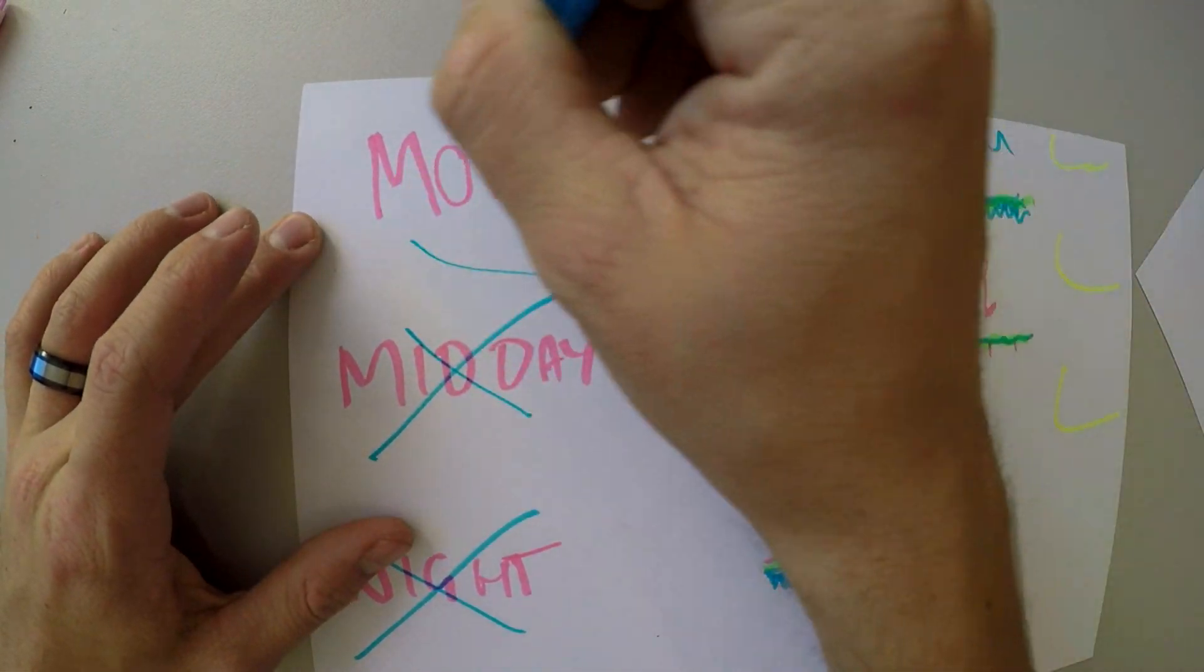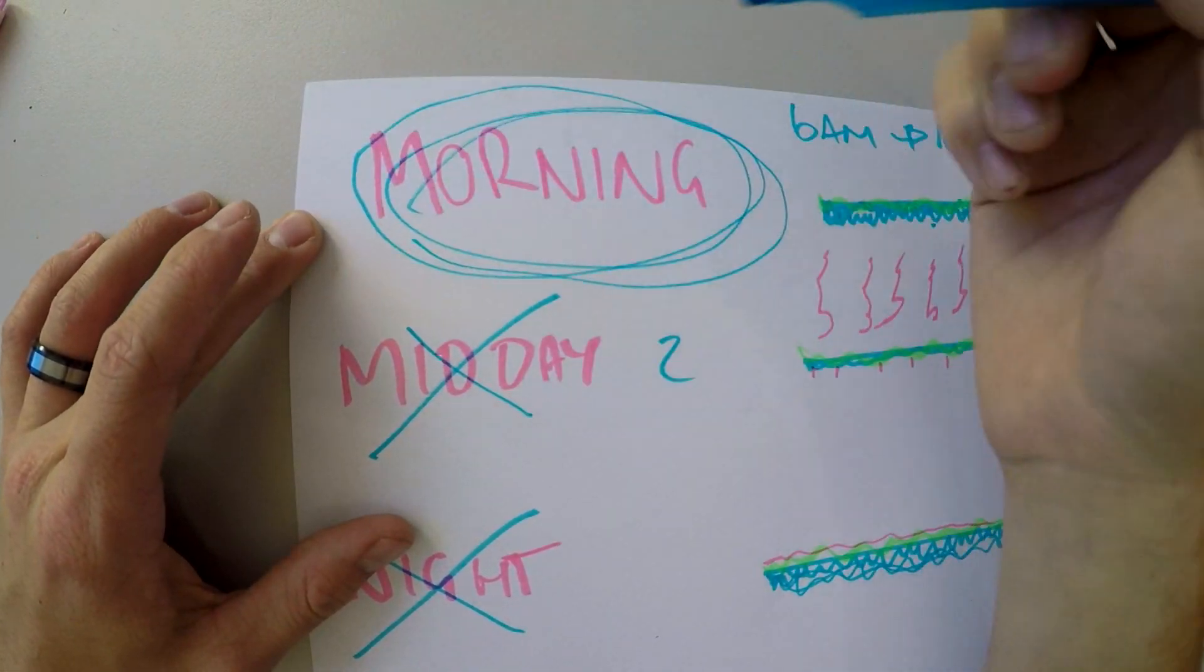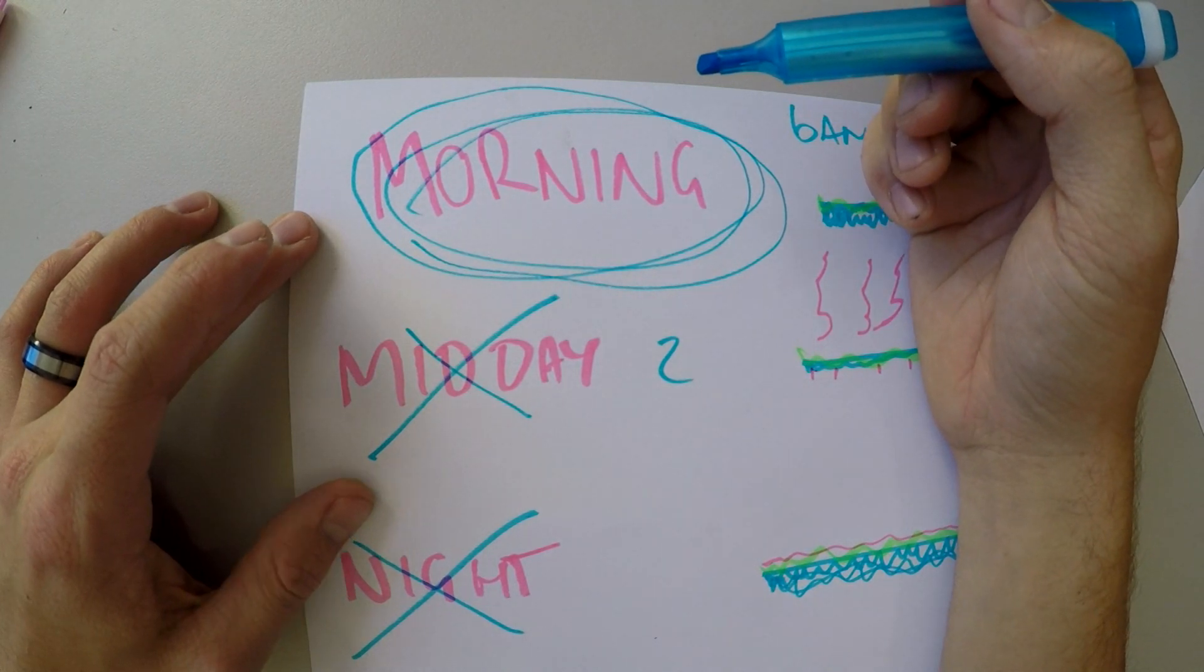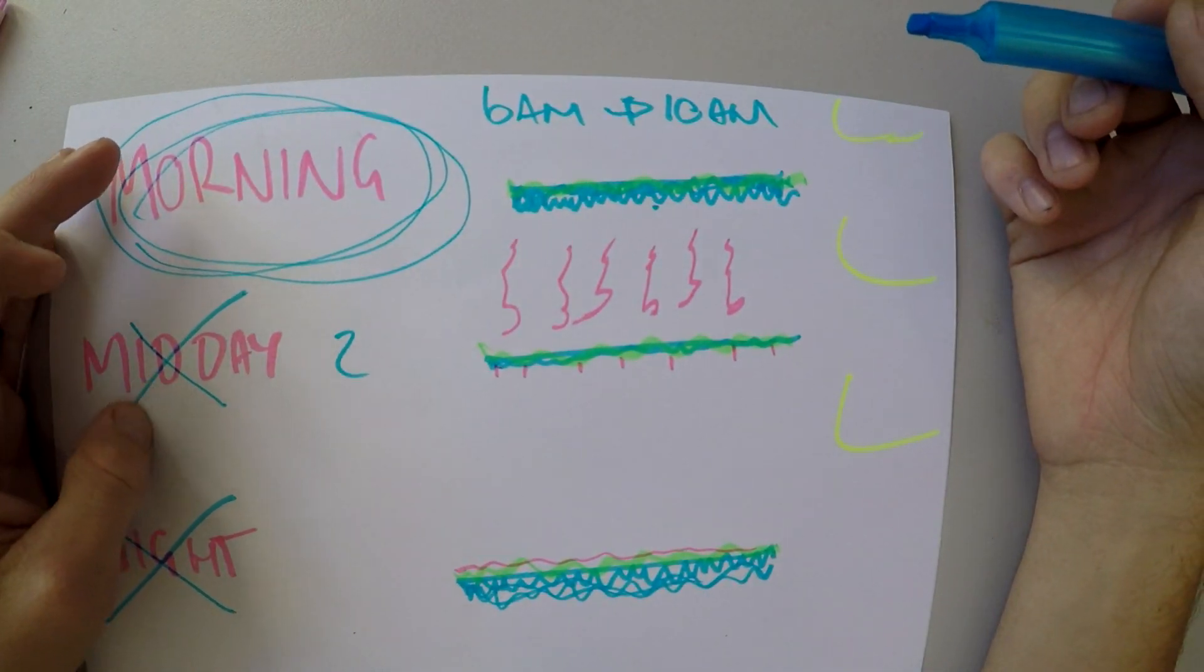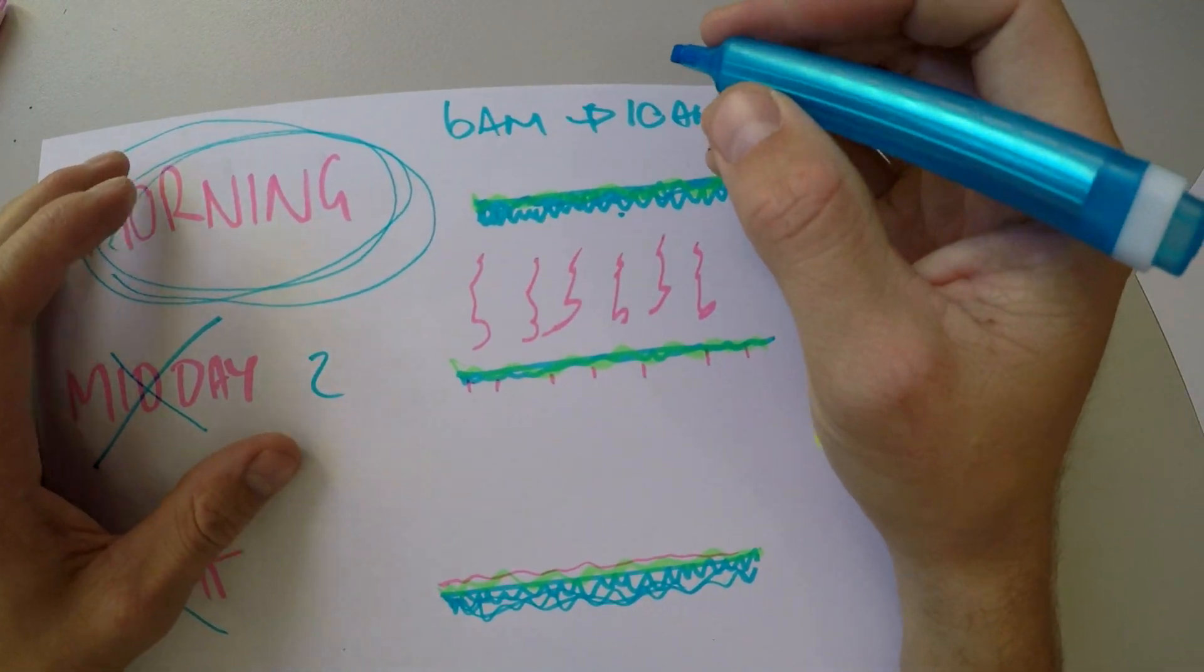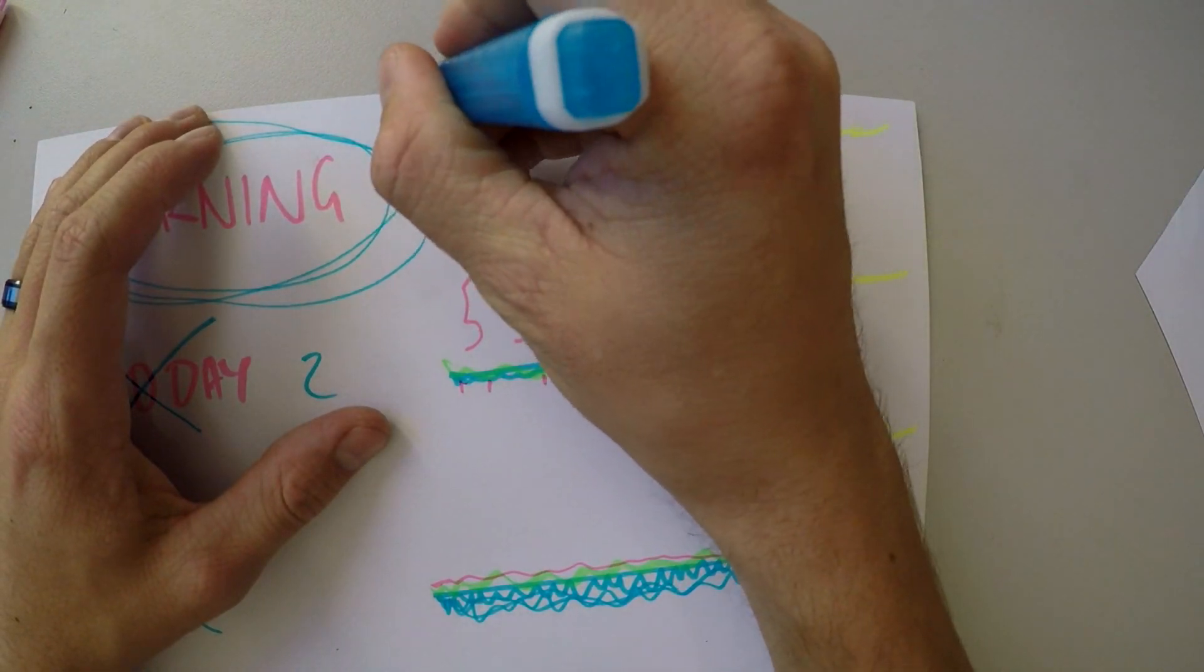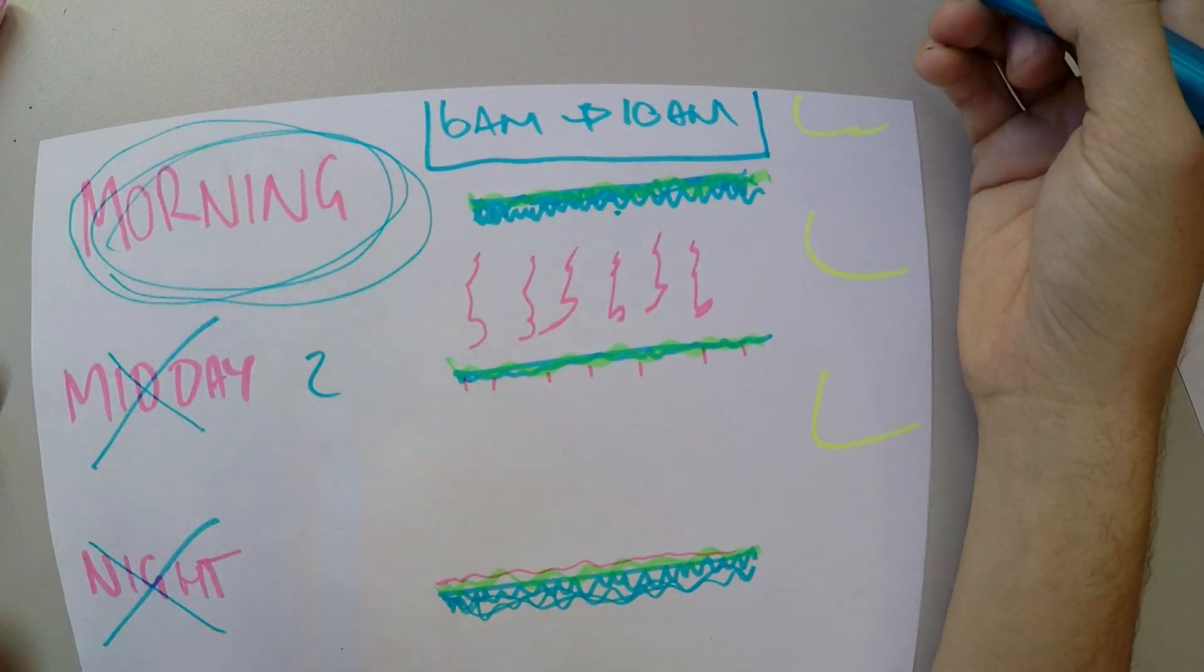Which leaves us to morning as the best time to water our lawn. So recommended time to water your lawn is between 6am and 10am.